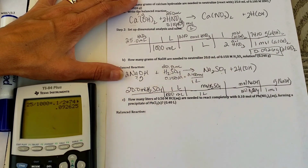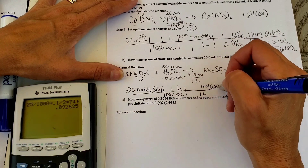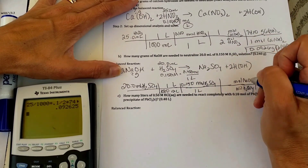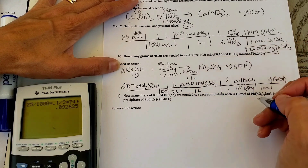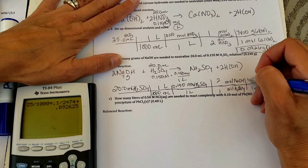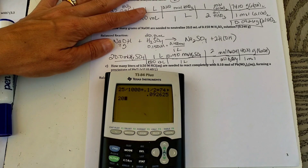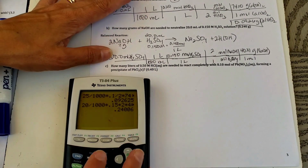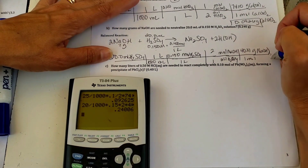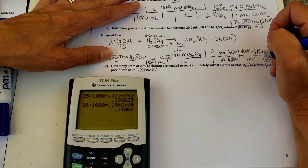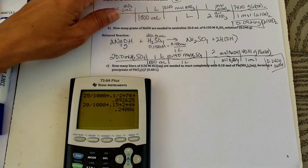Let's fill in the numbers. A thousand milliliters equals one liter. One liter of sulfuric acid has 0.150 moles — based on the molarity. Then the mole-to-mole ratio is two moles of NaOH to every one mole of sulfuric acid. Sodium hydroxide has a molar mass of 40.01 grams. The calculation is: 20 ÷ 1000 × 0.15 × 2 × 40.01, which gives us 0.240 grams of sodium hydroxide needed to react with all of the sulfuric acid.